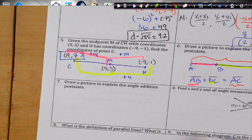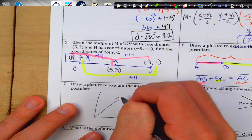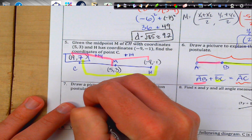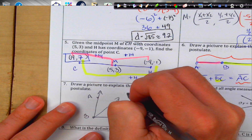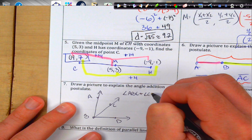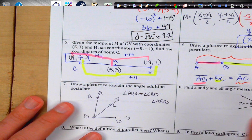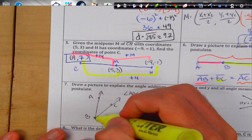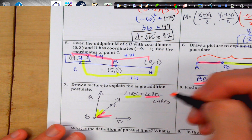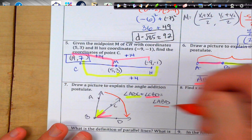Draw a picture to explain the angle addition postulate. Put points A, B, C, D. We say angle ABC plus angle CBD equals angle ABD. Using colors: yellow for angle ABC, plus pink for angle CBD, should equal the entire angle ABD.